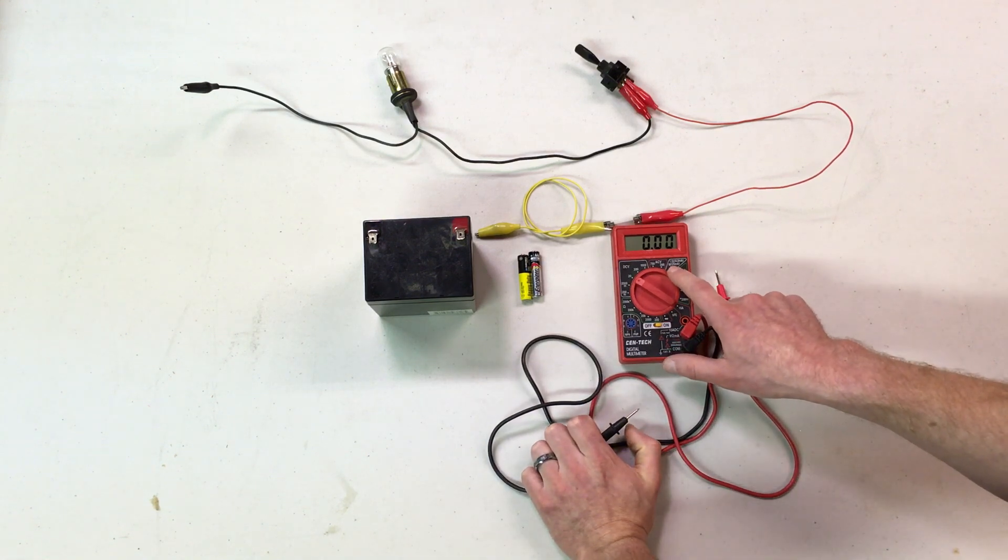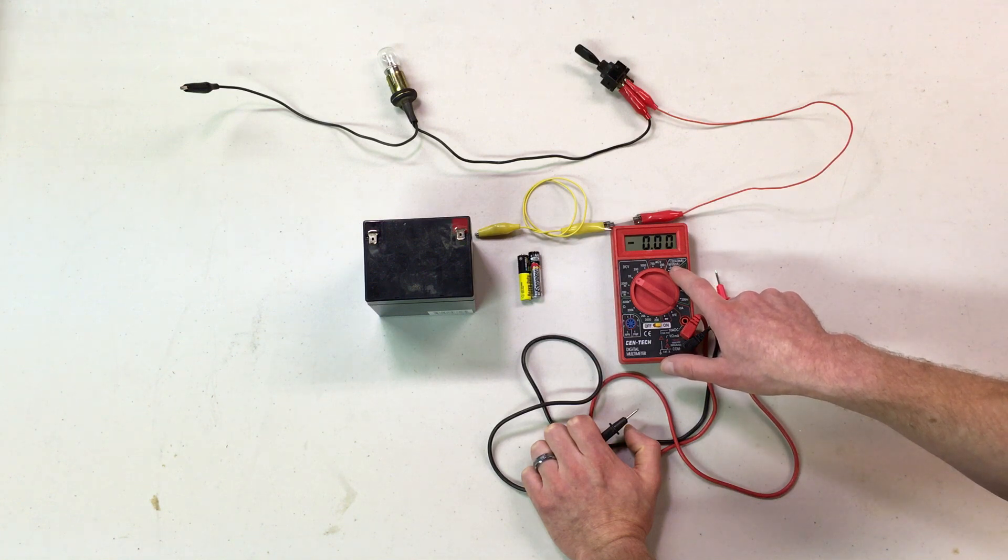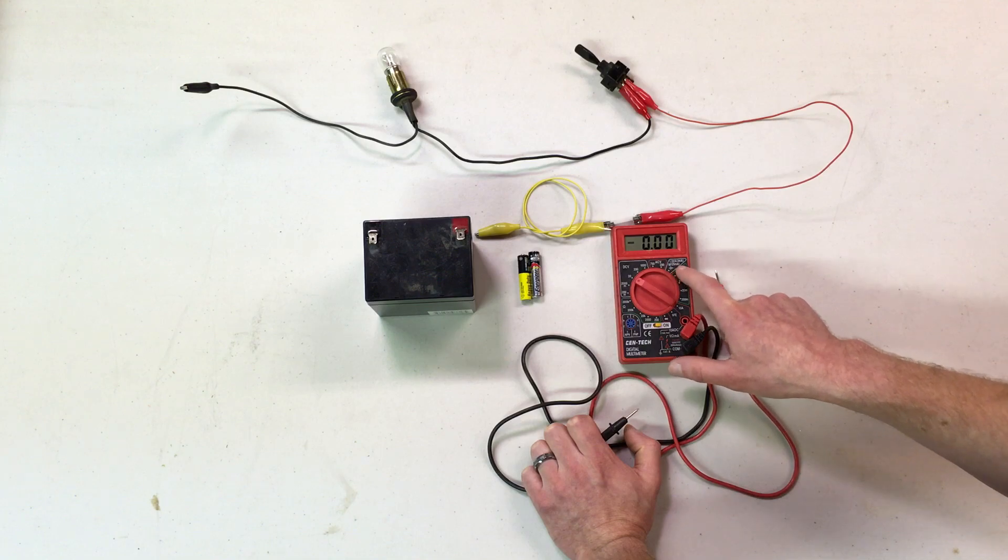There's also a 9 volt setting for a 9 volt battery, and it would look for a 25 milliamp current draw for that.